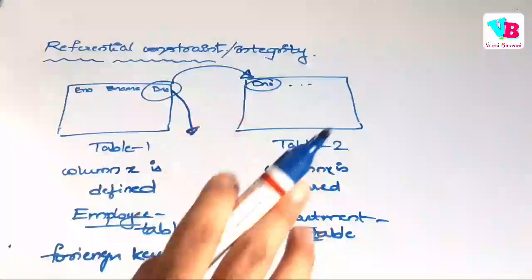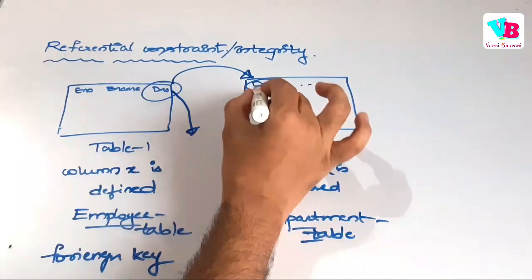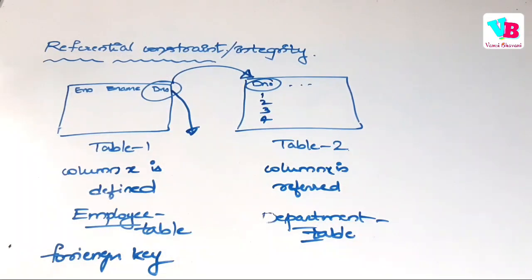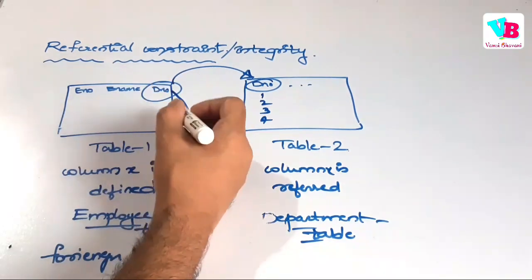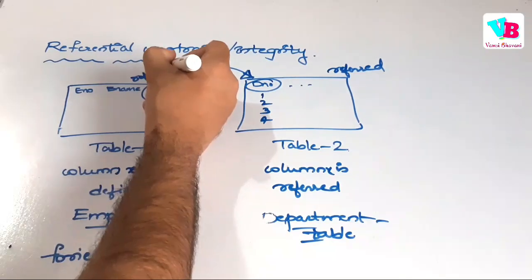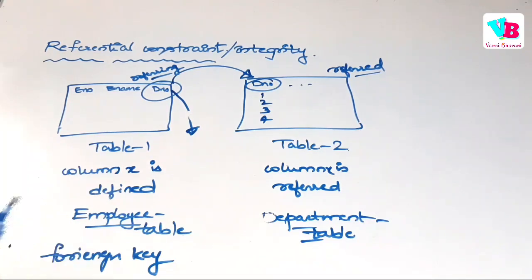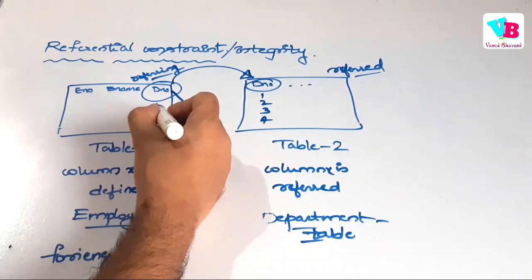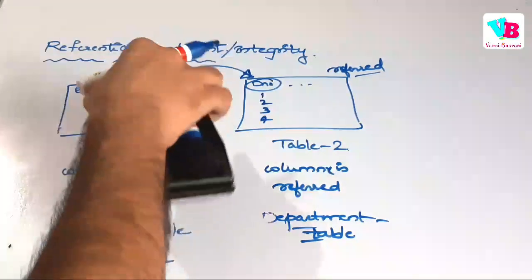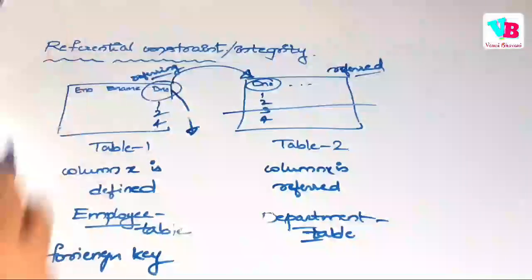it should have values that exist in the referred table. Basically, let's say in the referred table we have department numbers 1, 2, 3, 4. Here in the referring table, we can have 1, 2, 3, 4. Then, you cannot have 5 in this table also. That is what is the constraint in the referential integrity.